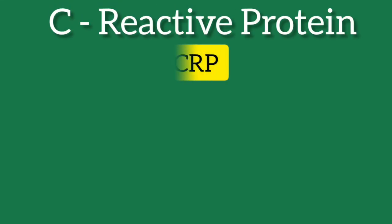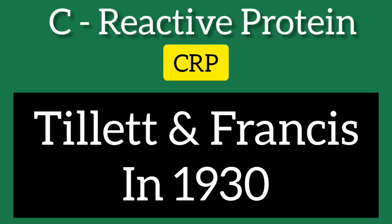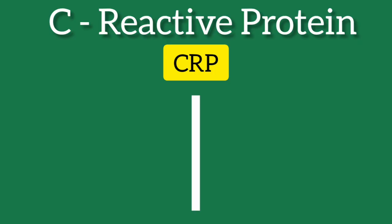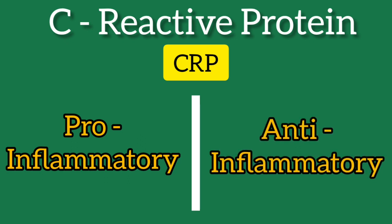C-reactive protein, or CRP, was discovered by Tillett and Francis in 1930. CRP is a pentameric protein synthesized by the liver whose level rises in response to inflammation. It is an acute phase reactant protein primarily induced by IL-6 action on the gene responsible for transcription of CRP during the acute phase of an inflammatory or infectious process. CRP has both pro-inflammatory and anti-inflammatory properties and plays a role in the recognition and clearance of foreign pathogens and damaged cells.